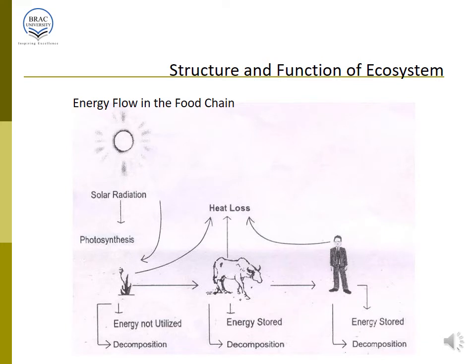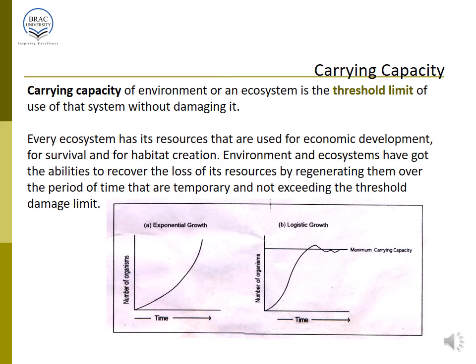We can see an example of a food chain where solar radiation is received through leaves and photosynthesis takes place. Within this process there is heat loss, because only photosynthetically active radiation is used. According to Lindeman's rule, 10% loss at each trophic level is inevitable — only 10% is fixed, and 80 to 98% is lost at each trophic level. This is how the food chain operates.